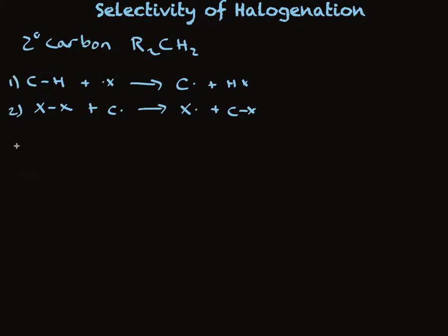And recall for these two steps, the delta H is equal to the bond strengths, the bond dissociation energies for the bonds that we're breaking. So it's just the CH bond dissociation energy minus what we make, the Hx bond dissociation energy.